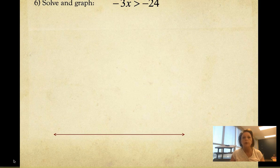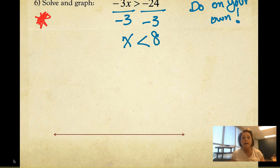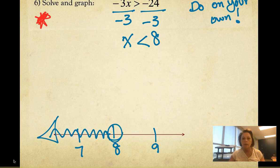Now that you have come back, hopefully what you did was divide both sides by negative 3. You just divided by a negative, so hopefully you said, 'Oh, I've got to flip my inequality symbol.' And I get x is less than 8 because the negative divided by a negative is a positive. When we graph that, we're going to get an open circle shaded to the left.